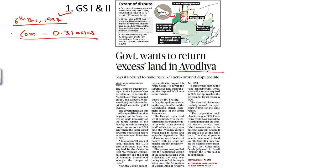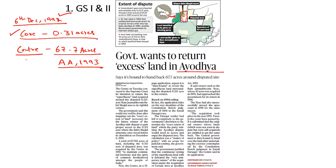The Ayodhya dispute is essentially a title dispute between a few Hindutva organizations and the Sunni Waqf Board. Due to the communal nature of the dispute, the central government acquired the land area adjacent to the disputed core area — nearly 67.7 acres — by passing the Ayodhya Act in 1993. This was done to maintain communal harmony and ensure other stakeholders would not carry out activities around the disputed area that could lead to further communal tensions.